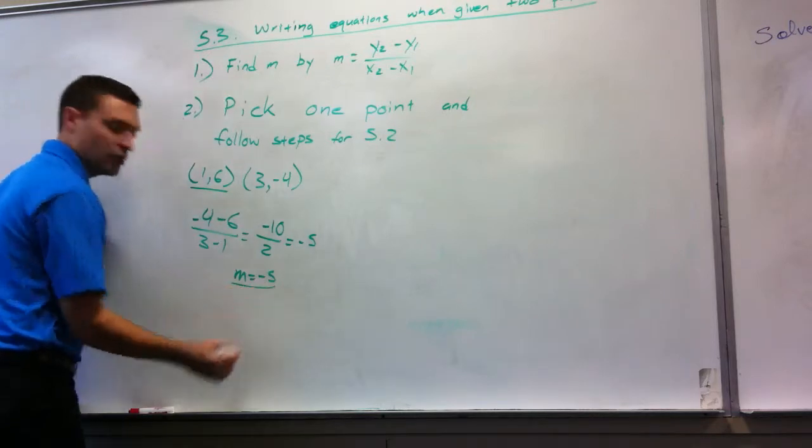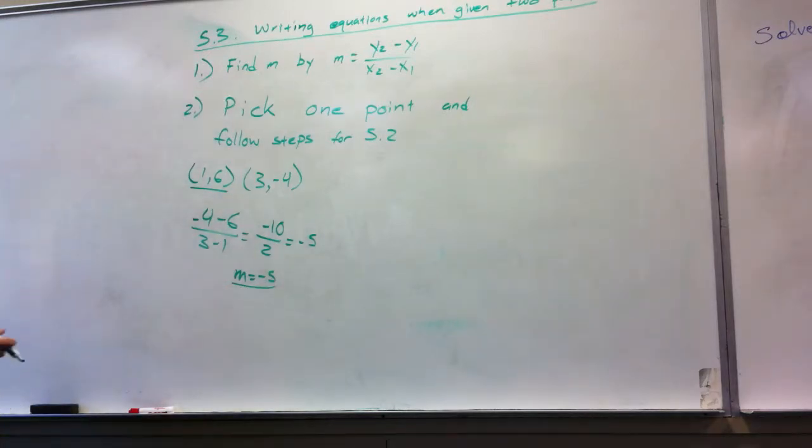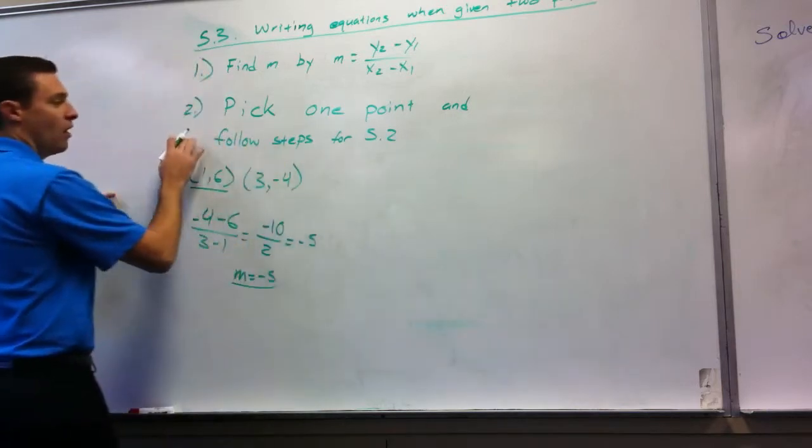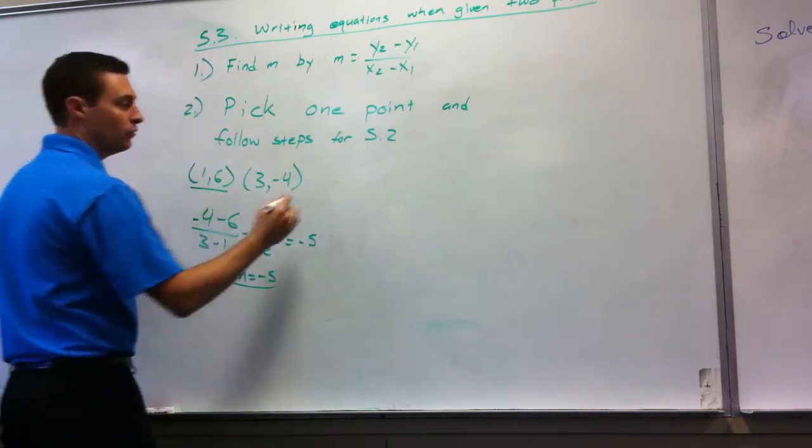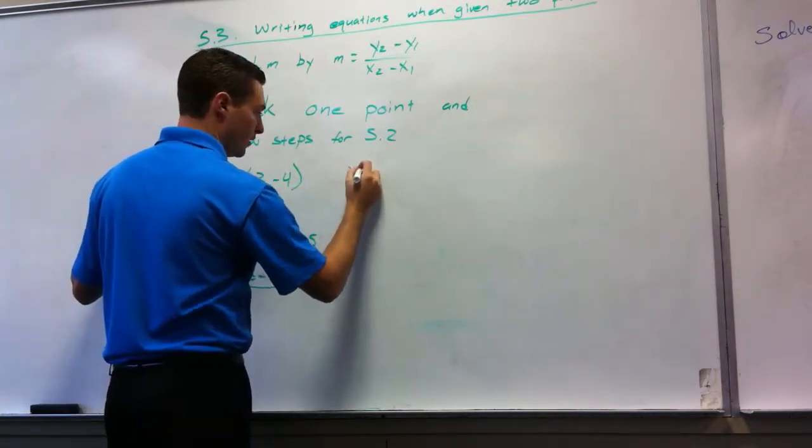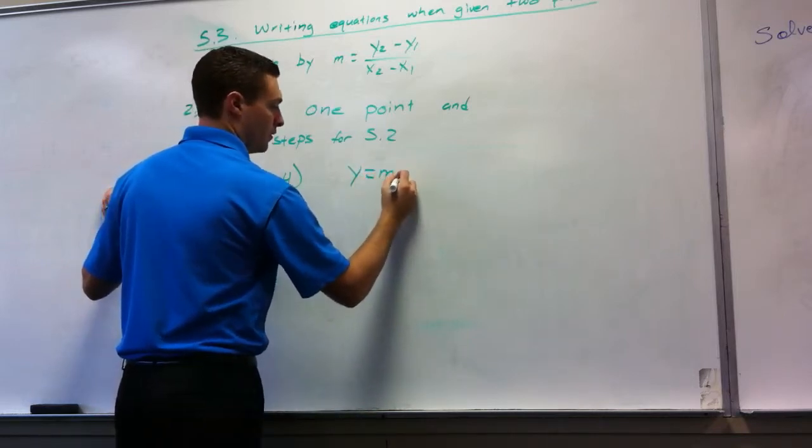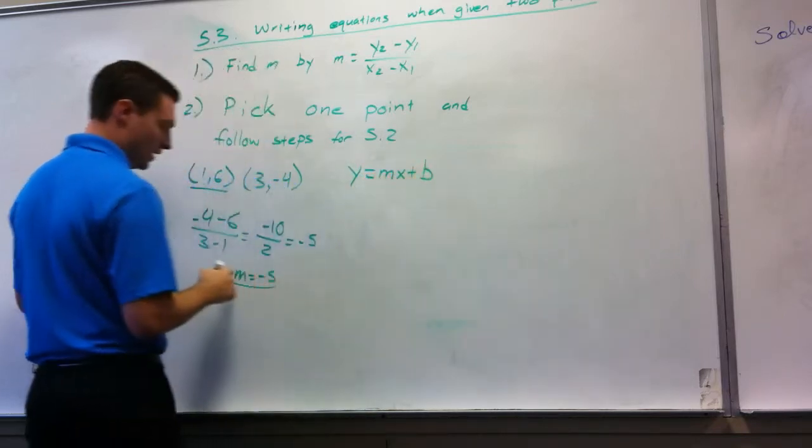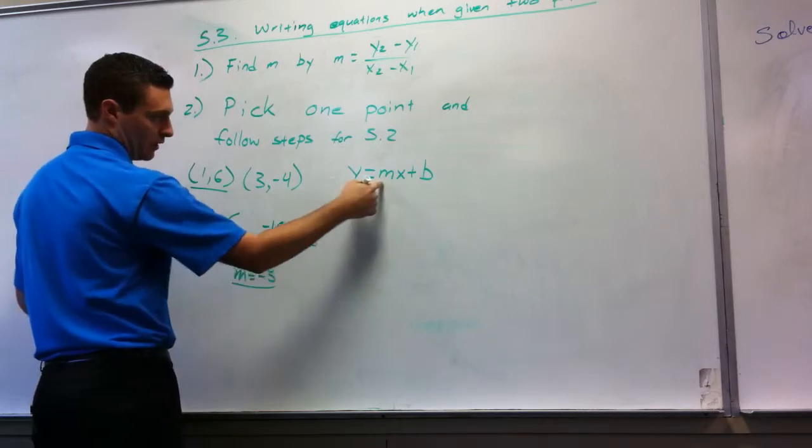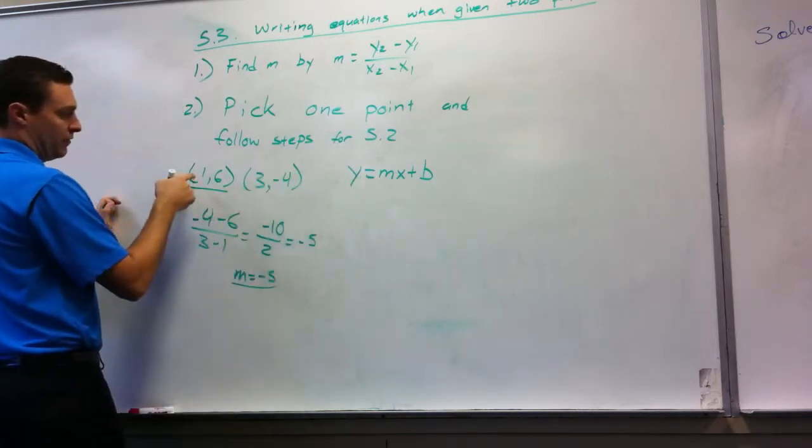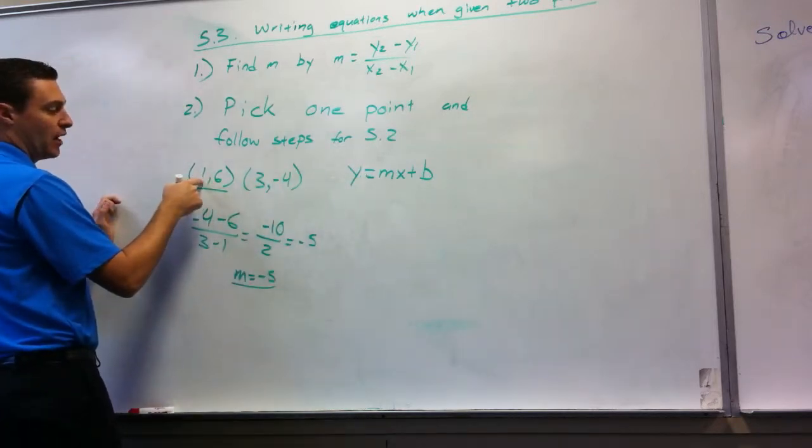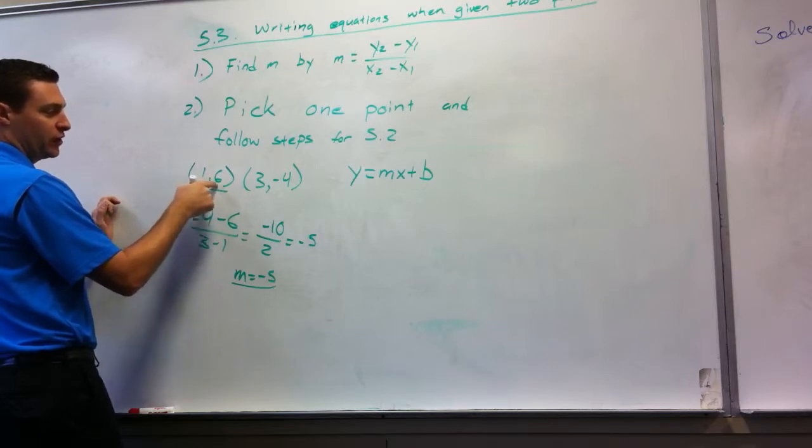So I'm going to pick this point. Use this slope. And I'm going to fill that information. I'm going to follow the steps in 5.2, which tell you to substitute the m value. And for m, the x and y value come from the point, x first then y second.